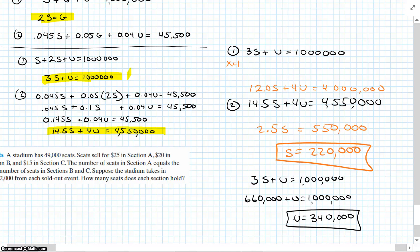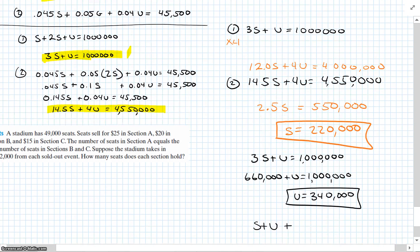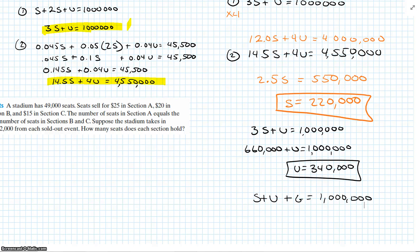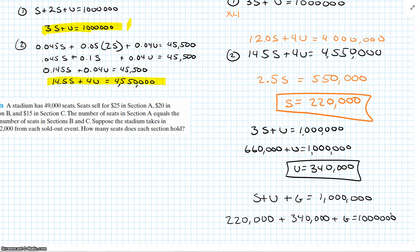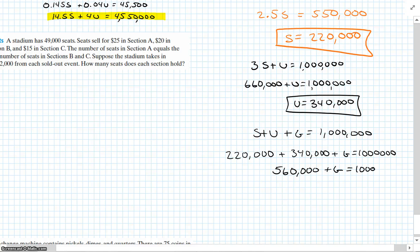The sum of all three is $1,000,000. So s plus u plus g equals 1,000,000. Our s was $220,000 and u was $340,000. Combining like terms: $560,000 plus g equals $1,000,000. So g equals $440,000 in the government bond.